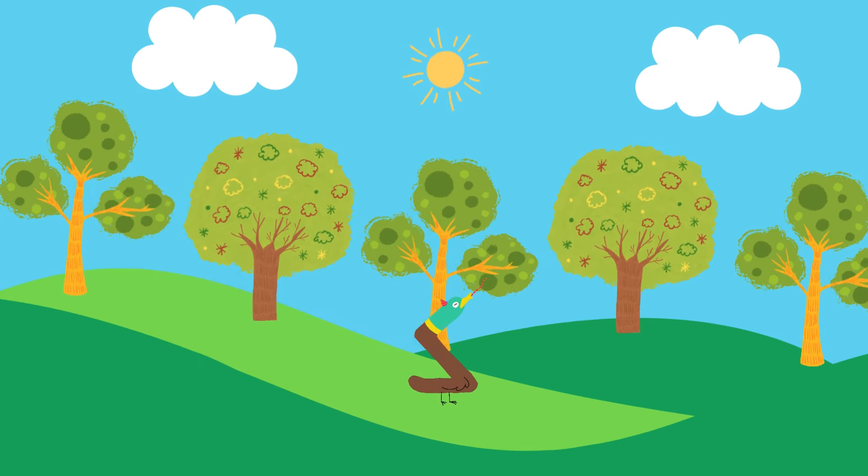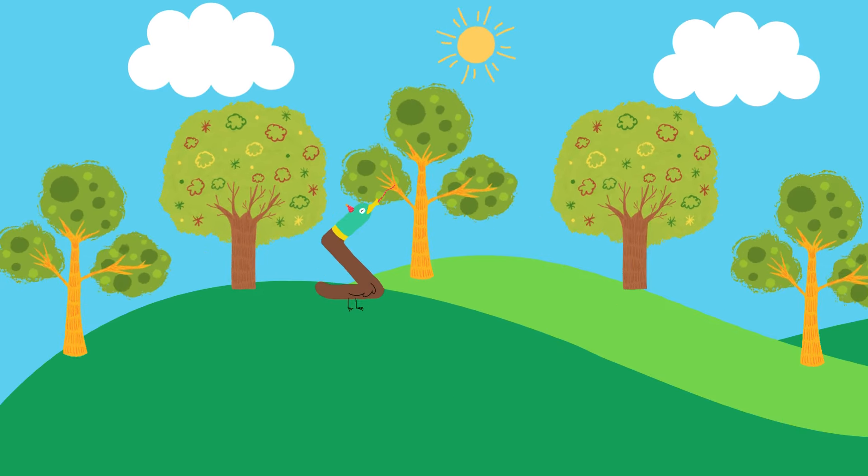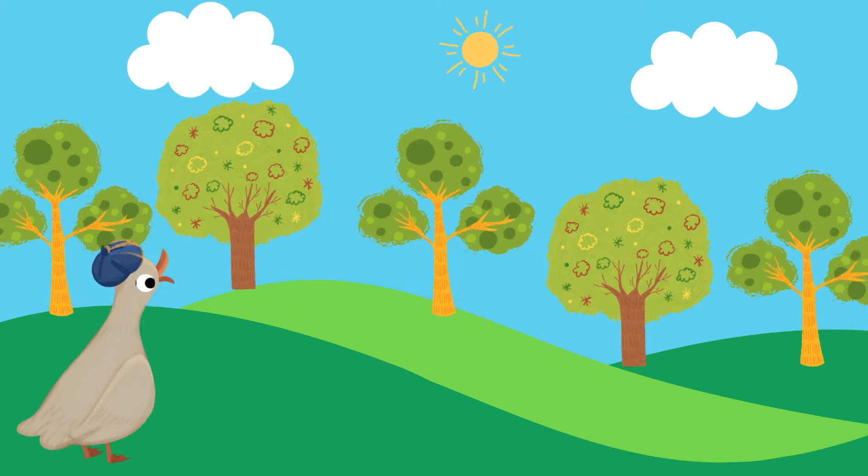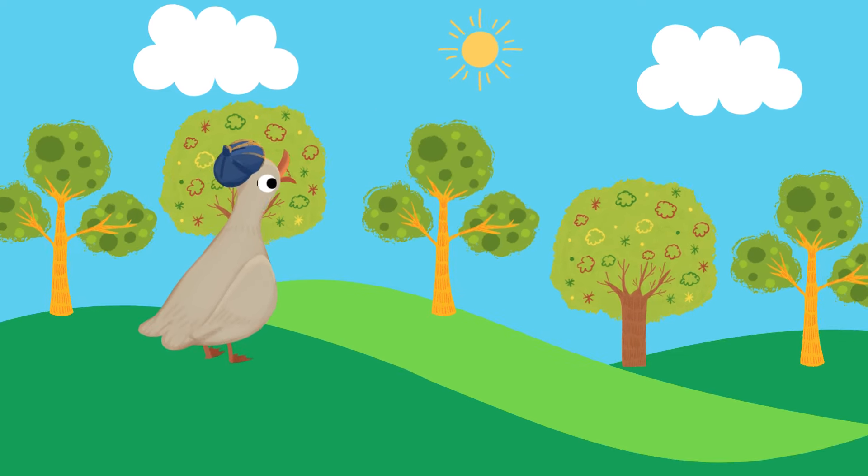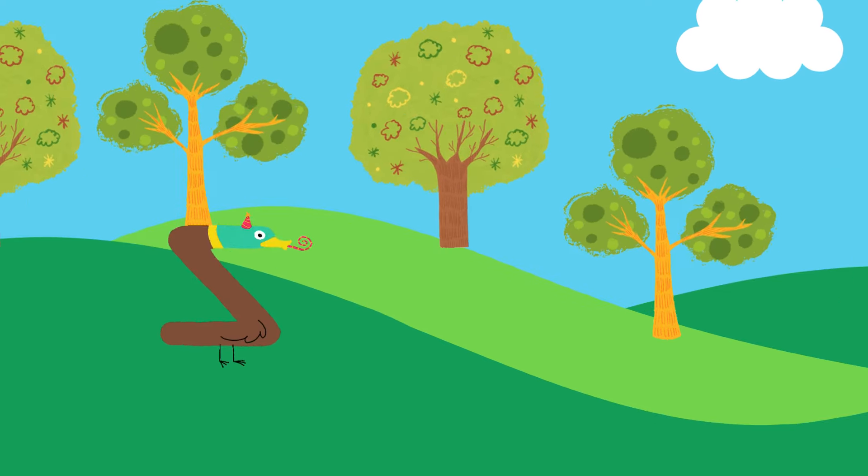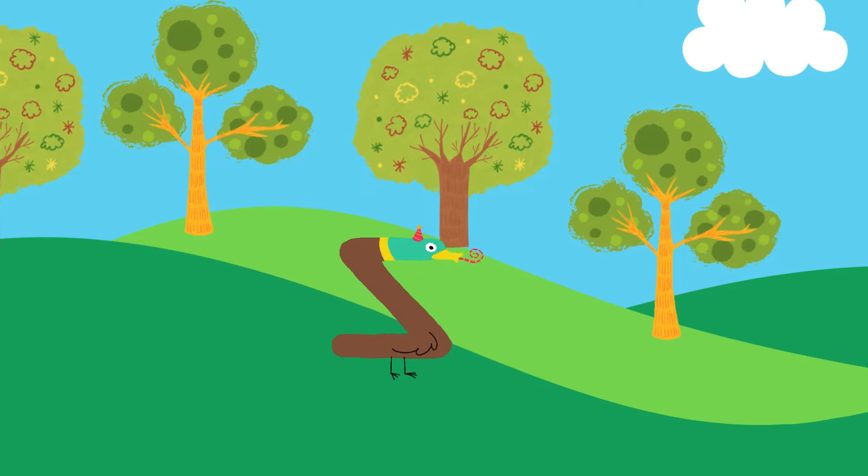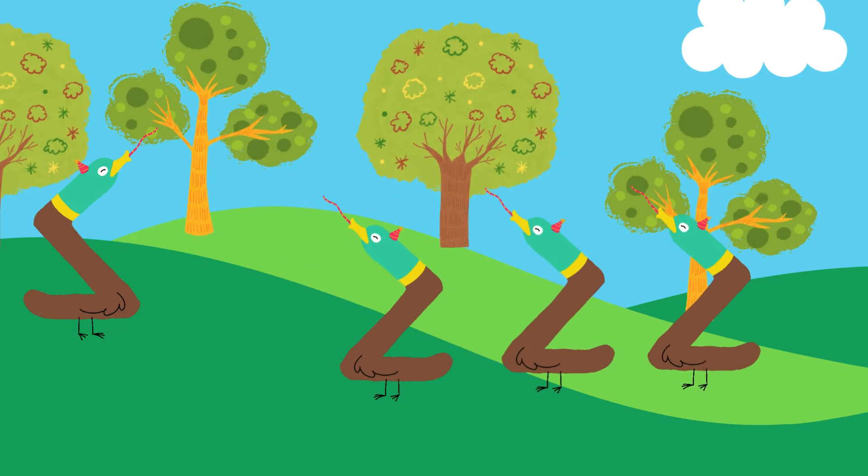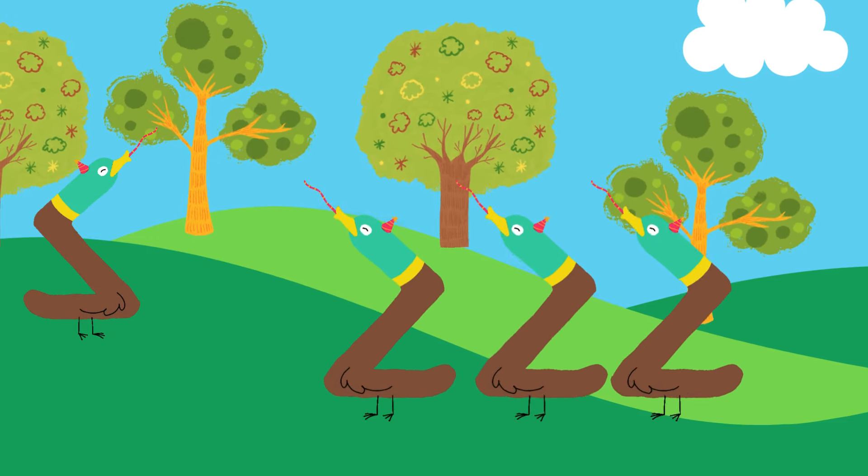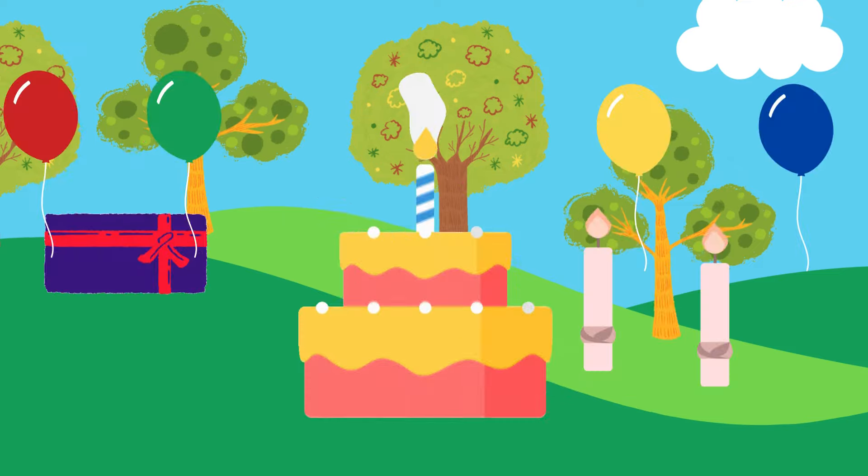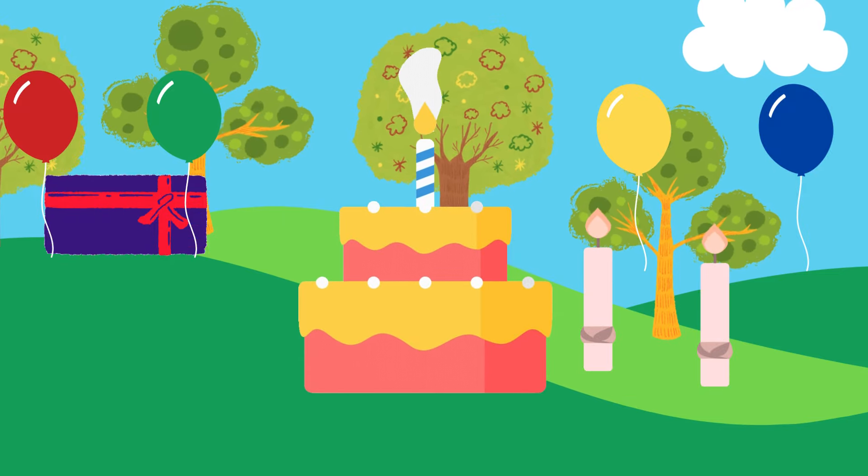One little duck went out to play, over the hills and far away. Mother duck said, quack, quack, quack, quack. One little duck went out to see, friends arriving with joy and glee. Quack, quack, quack. It's time to cheer, for the birthday party is finally here.